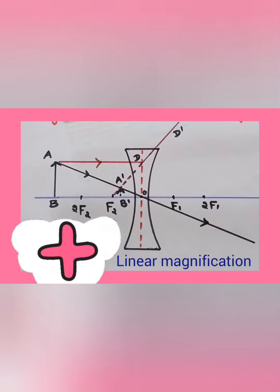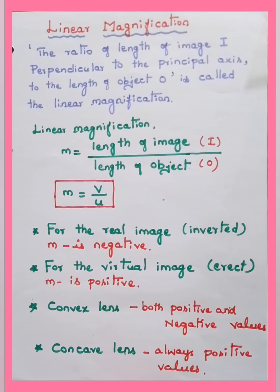Here you can see there is an object beyond 2F and image is formed between the focus and the optical center, and it is upright, erect image. Therefore we can conclude: for convex lens linear magnification is both positive and negative values, for concave lens it is always positive value. Already we have discussed the ray diagrams related to convex and concave lens.